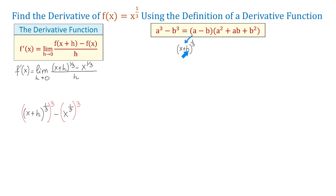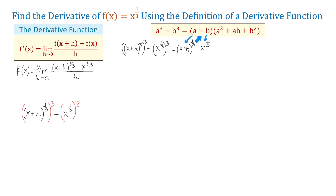In this formula, let a be x plus h to the one-third and b be x to the one-third. Now I will go and replace each a and b with these two expressions. So to the left of the equal sign, we will have x plus h to the one-third all cubed minus x to the one-third all cubed. So this is a cubed and this is b cubed. To the right, I will put these two expressions in parentheses and subtract them.